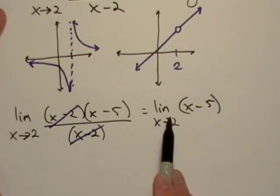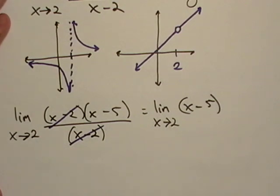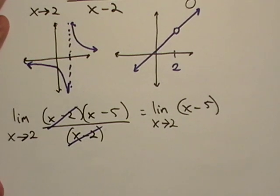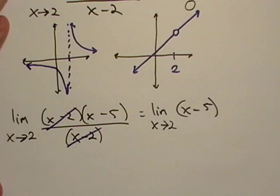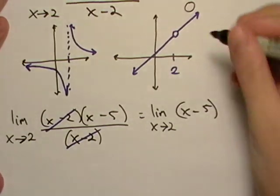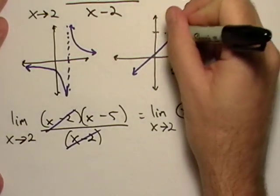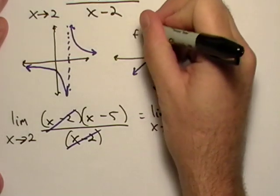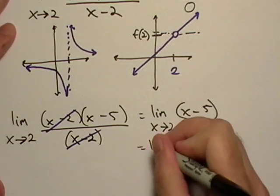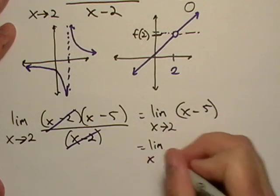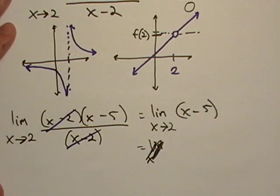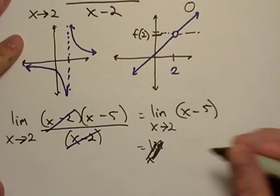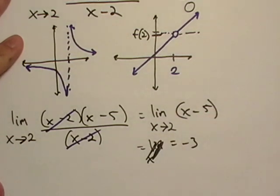So now we can go and use the substitution method. So what is this function really doing at x equals 2? So if we look at our graph, yeah, it's undefined there, but it's still approaching this value right here, this value f of 2. Well, I don't have to rewrite the limit, do I? So that is just equal to negative 3.